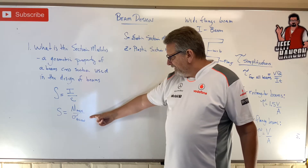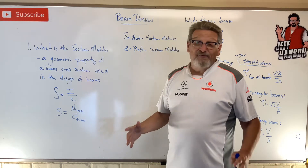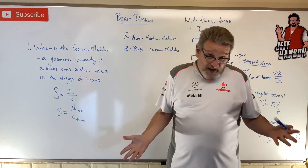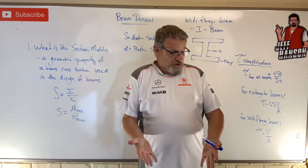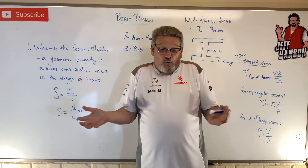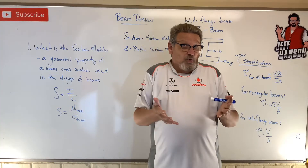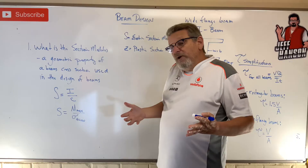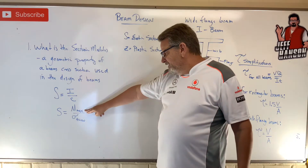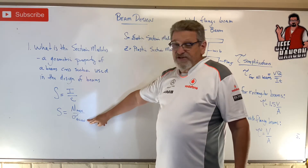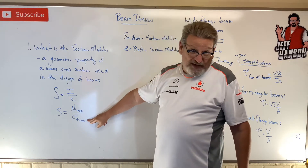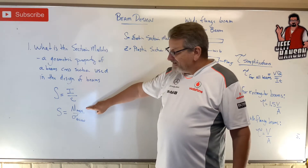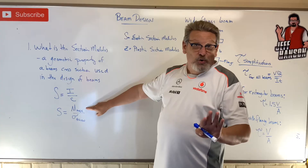You might see one of two equations. The second one is S = M_max divided by sigma_allowable. Which one do I use? It depends on what information I have. If I know the load on the beam, I can do a shear-moment diagram and calculate M_max. Sigma_allowable for steel I can just look up.